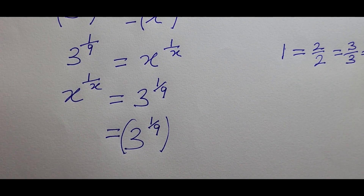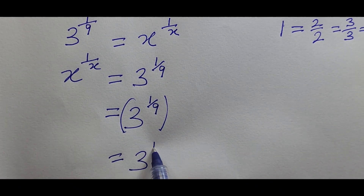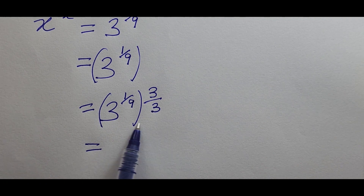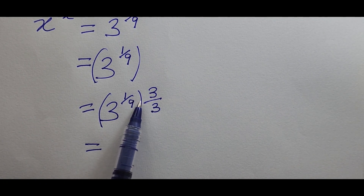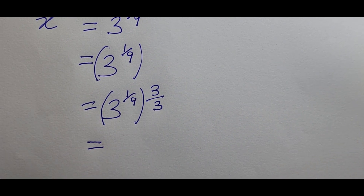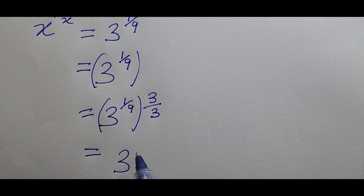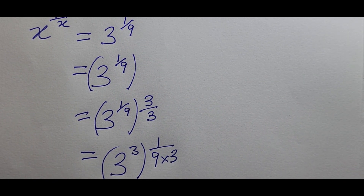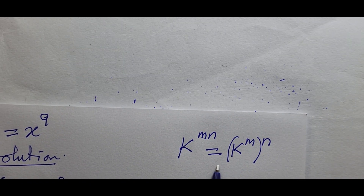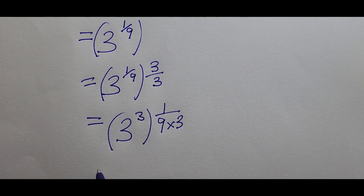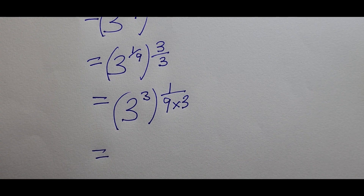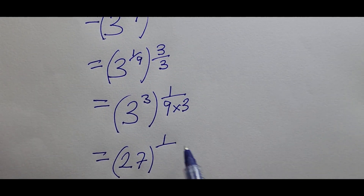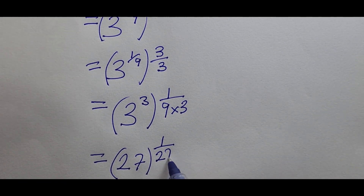So we raise 3^(1/9) to the power of 3/3. Applying the power law of indices, we bring the 3 inside and the remaining factor outside: this gives us (3^3)^(1/(9×3)). Now 3^3 equals 27, and 9×3 equals 27, so we have 27^(1/27).